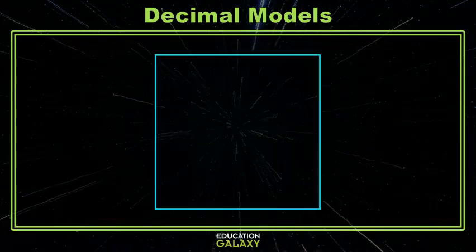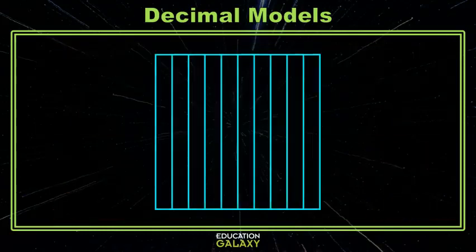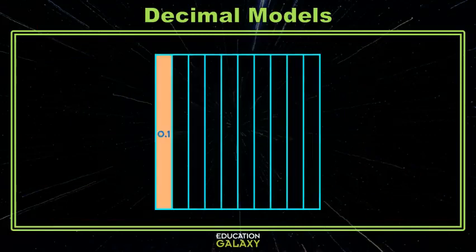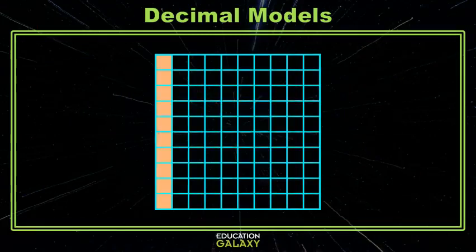So, back to our square that I chopped into 10 pieces and told you that one of those pieces is a tenth. Well, if I take each of those tenths and chop them into 10 pieces, one of my pieces is a hundredth. There are a hundred of those little squares inside my whole square.